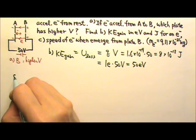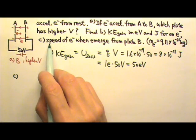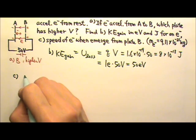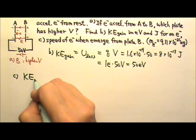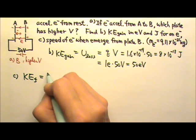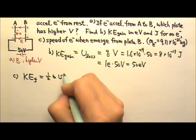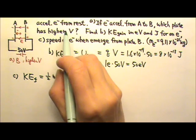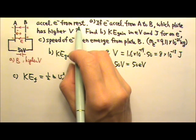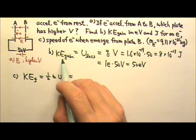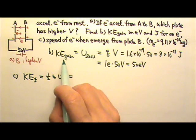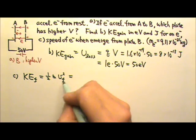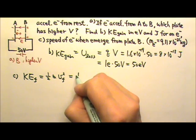Part C, we need to find the speed of the electron. The final kinetic energy equals one-half mv squared. Because the electrons accelerate from rest, the initial kinetic energy is zero. So the kinetic energy gain equals the final kinetic energy, which is one-half mv squared.